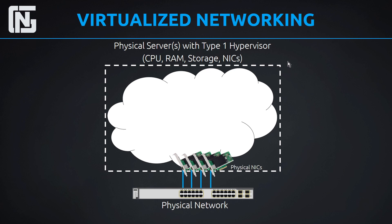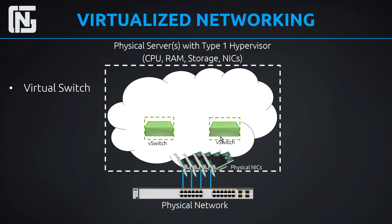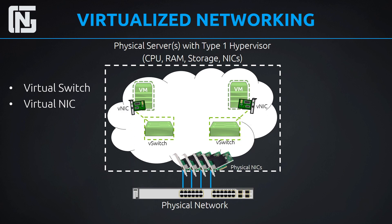Let's say we installed a type 1 hypervisor such as VMware vSphere ESXi on this box. We can then start configuring our virtual environment. The first part of virtualized networking we always have is a virtual switch, and our vSwitches can be mapped to physical NICs — so our physical network is connected into our virtual network. Then we create multiple virtual machines inside the server. Once we create our virtual machines, we need to set up a virtual NIC — our virtual network interface card. That vNIC is then connected to a vSwitch, and the vSwitch is mapped into our physical NICs. That's the basics of virtualized networking.